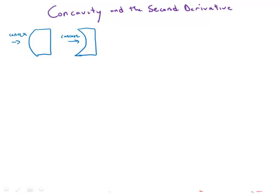So now we're going to talk about the idea of concavity. Concavity is about the way a function is curving, the way the graph of the function curves.